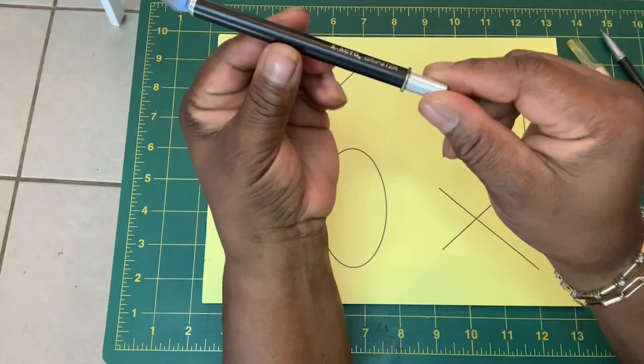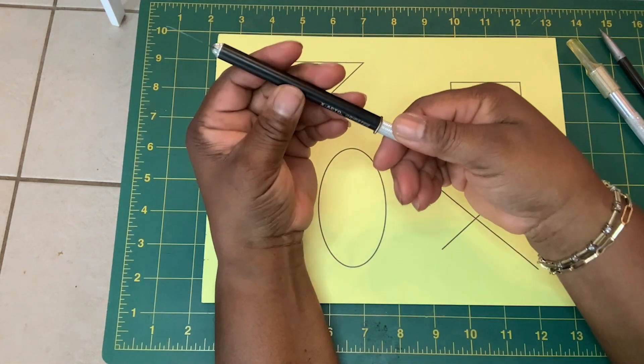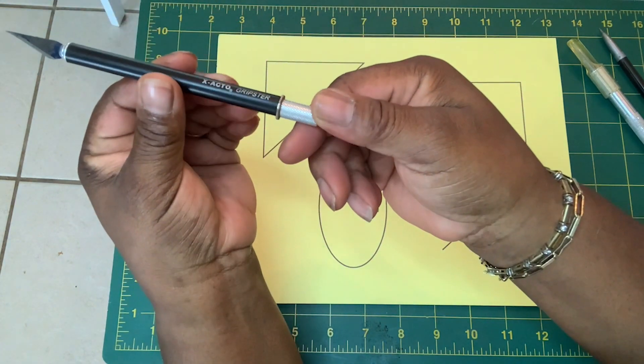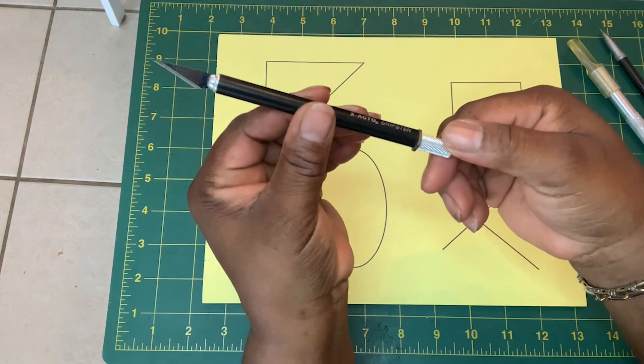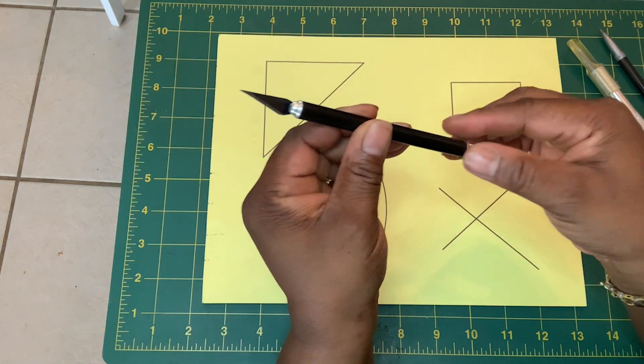It has a very easy way to replace the knife. It has this awesome grip at the bottom that all you have to do is turn, and what that does is it loosens the top of the gripster so that you can just pull out the blade.